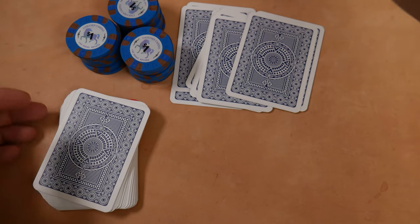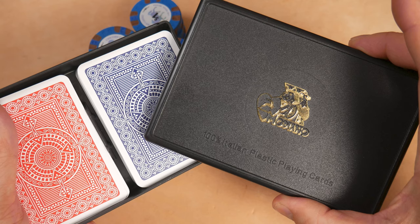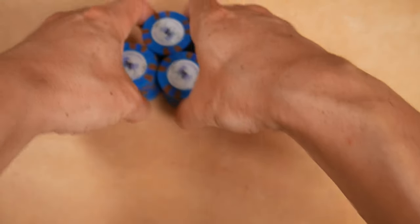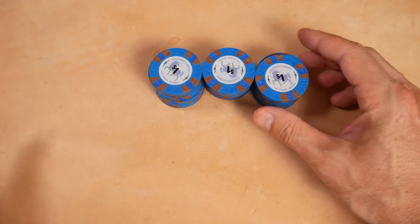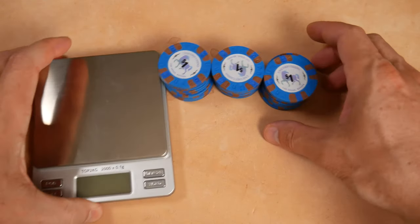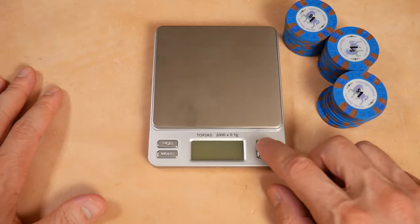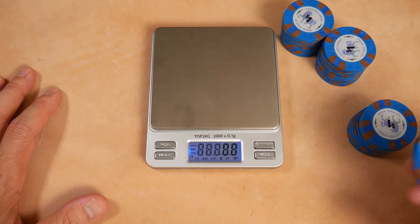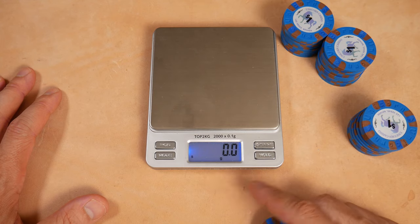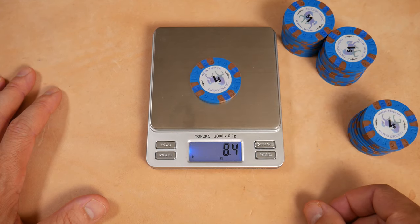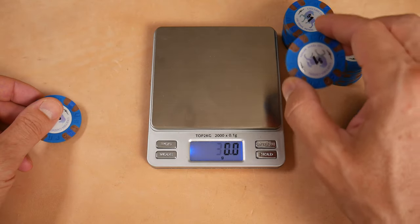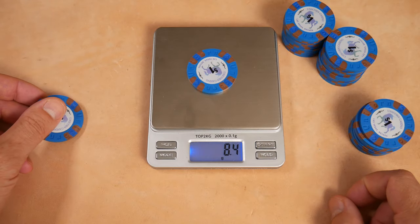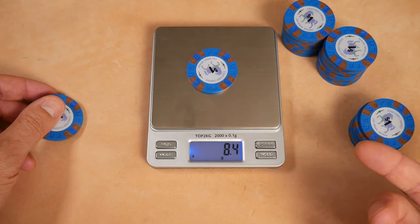These cards are Modiano. I have the case around here somewhere. But putting those aside we are going to focus on the chips. Now I guess the first thing that I like to do is get the technical stuff out of the way. So we're going to weigh them right here. We're going to try this live weighing thing. It seems to work pretty well. A couple of individuals. Grams right here. 8.4. Should be right around 8.5. 8.4 grams.